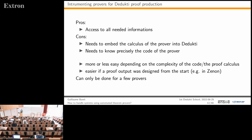However, there are drawbacks. First, you need to embed the entire proof calculus of the prover into Dedukti, which can be large and unstable—new prover versions change inference rules every year. Second, you need to know the code precisely to know where to add proof-output instrumentation, making the approach more or less feasible depending on code and calculus complexity.